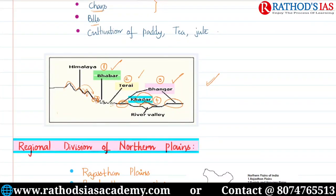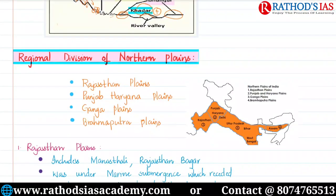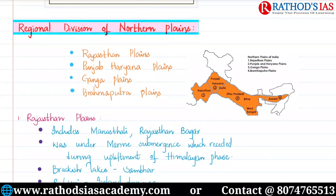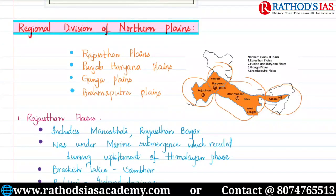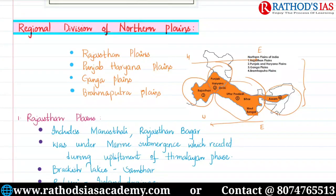Now let us see the regional divisions. Based on location, the Northern Plains are divided into four types: first, Rajasthan Plains; second, Punjab Plains; third, Ganga Plains; and fourth, Brahmaputra Plains. From west to east, you have to remember this order — and this might be a prelims-based question.